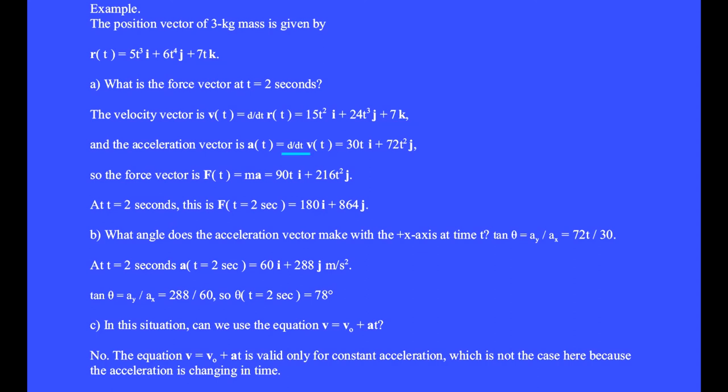The time derivative of the velocity vector gives the acceleration vector. We get 30t i-hat plus 72t² j-hat.